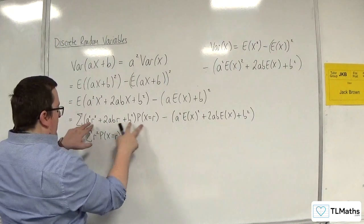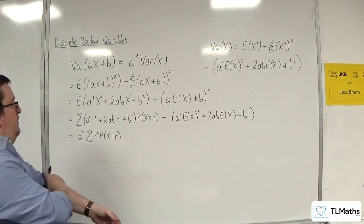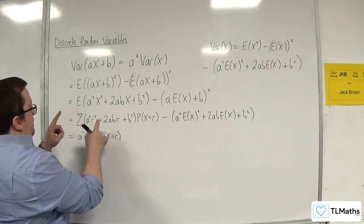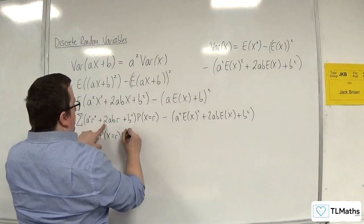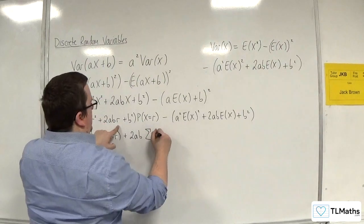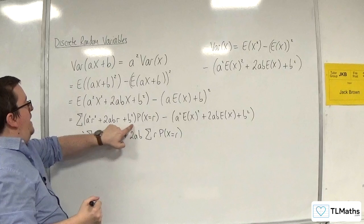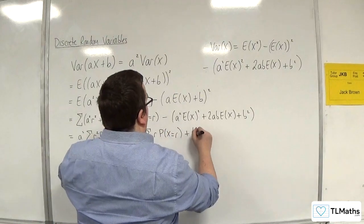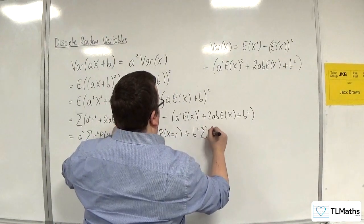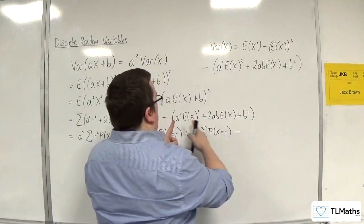I'm essentially multiplying that and splitting the summation apart. I know I can bring out the factor of a squared. Here I'm going to have 2ab coming outside of the summation and I've got r times the probability of x being equal to r. And here I'm going to have b squared coming outside of the summation times my probability of x being equal to r. And don't forget we've got all of this.